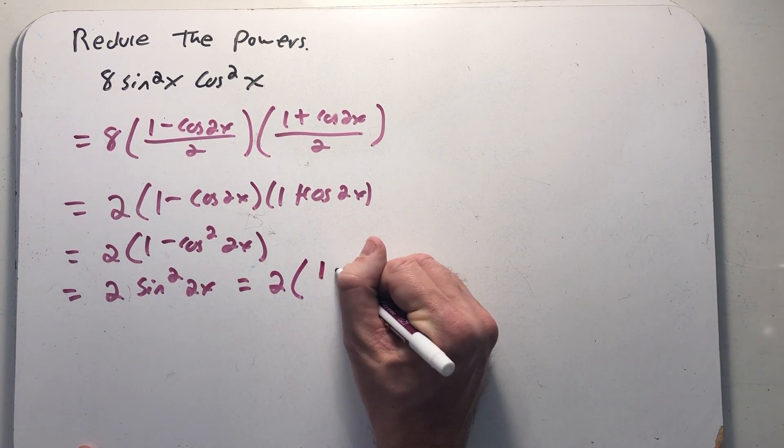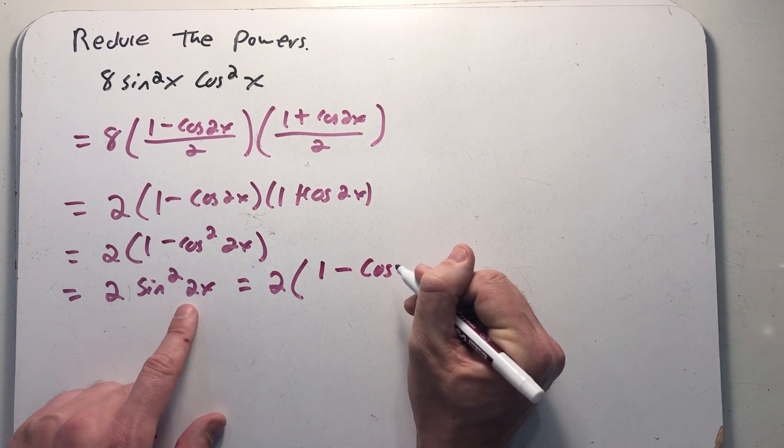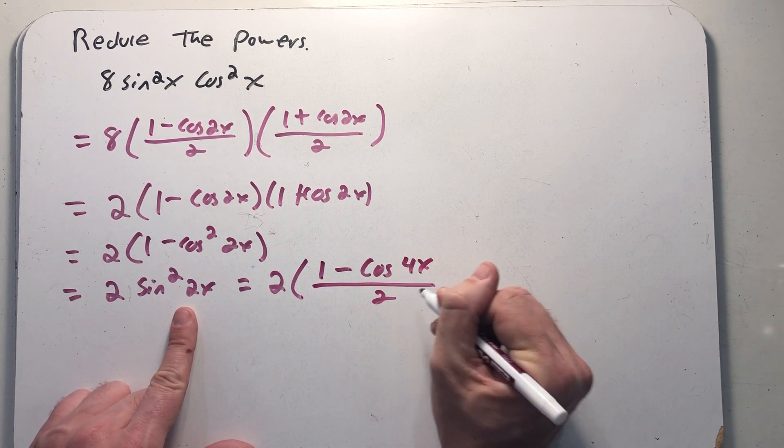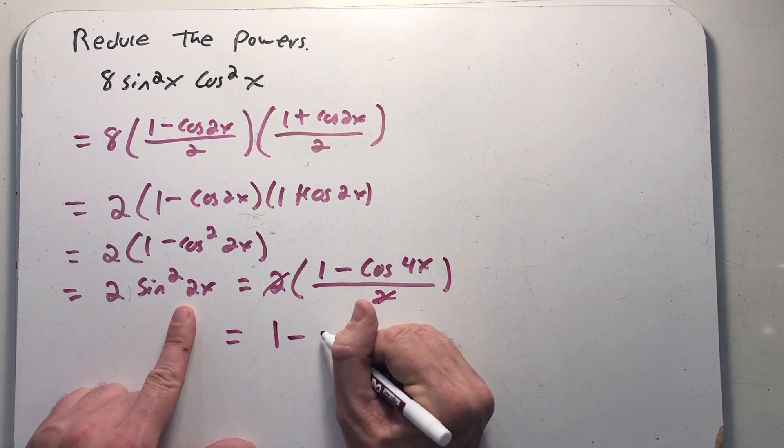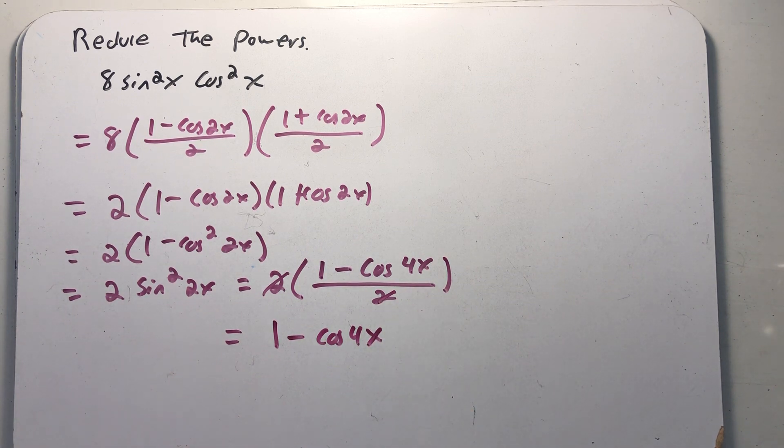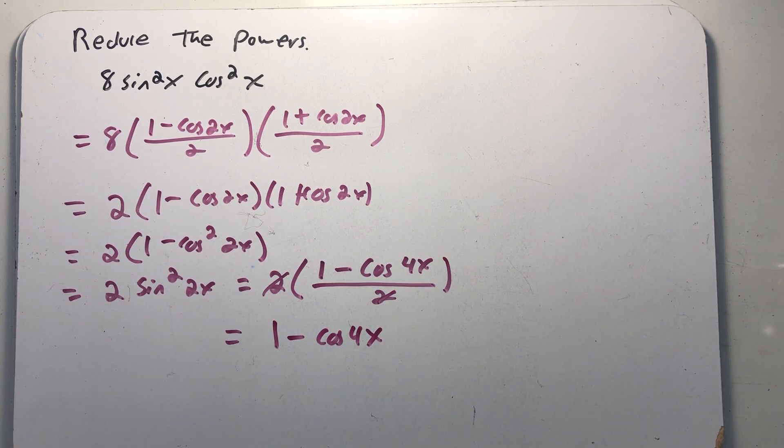Sine squared is the same as 1 minus cosine of this angle doubled would be 4x all over 2. Those 2's cancel, and now I'm all done. 1 minus the cosine of 4x, a much simpler expression.